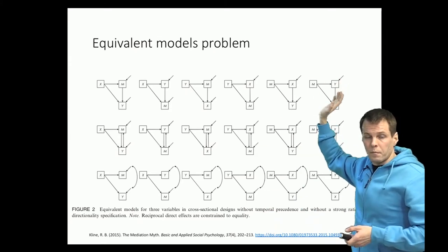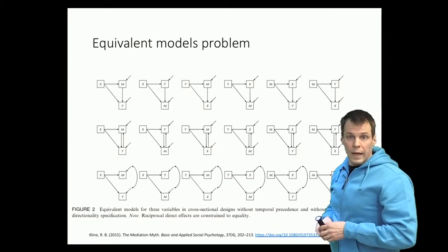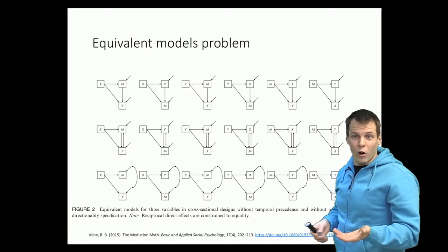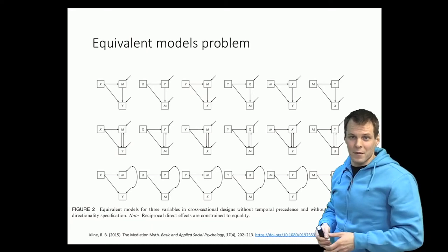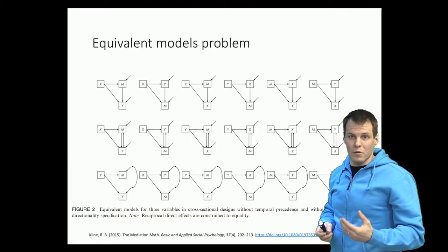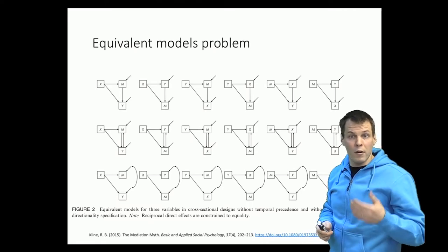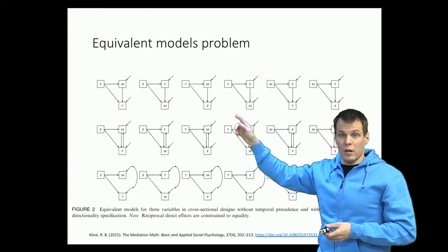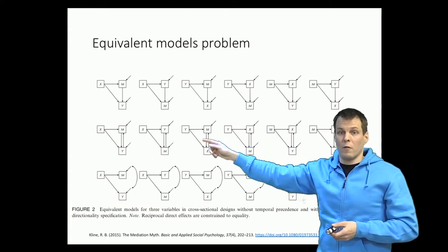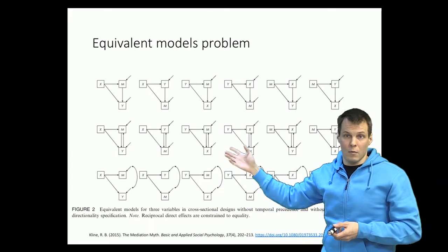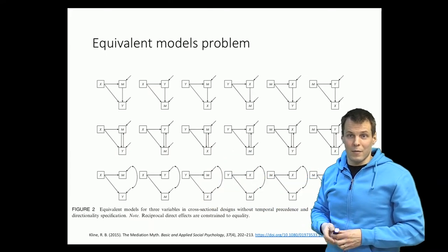So you have 18 models, all of them plausible. Which one is the best for you? That's where your theory comes into play. Unless you have longitudinal data, you have to theoretically argue that your model is one of these and not the other one, and that can be difficult to do.